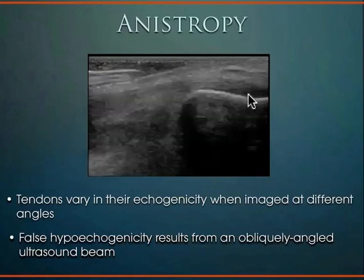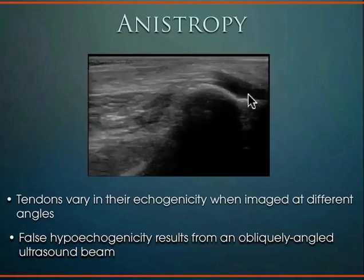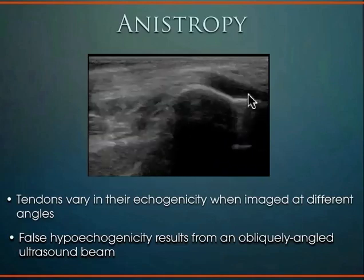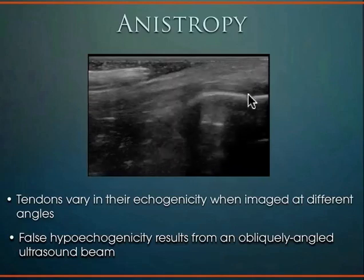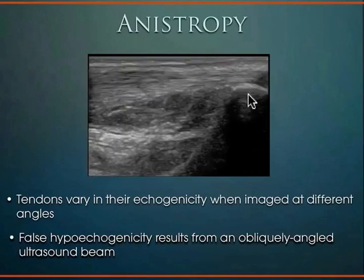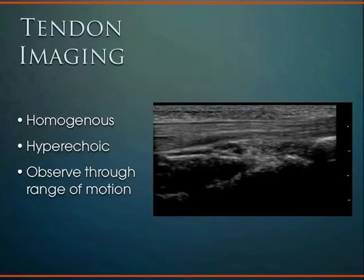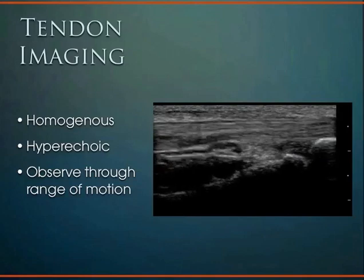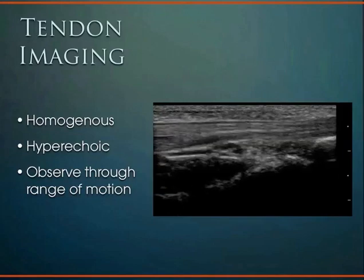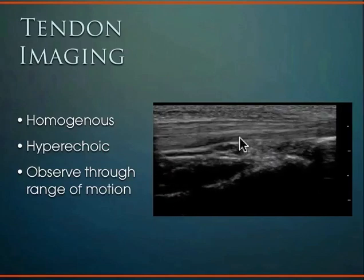You have to be careful imaging tendons — when you see possible pathology, change positioning to ensure you're not just looking at anisotropy. It has to do with how perpendicular the transducer is to the tendon; if not completely perpendicular, the sound waves won't return to the crystals and it comes out as potential pathology. When imaging tendons, it should be nice, consistent, homogeneous tissue with a fibrillar pattern and be hyperechoic. You can see the tendon move through its whole range of motion as you flex and extend the joint.